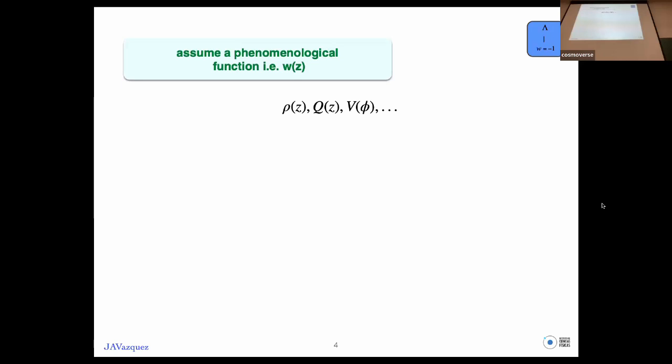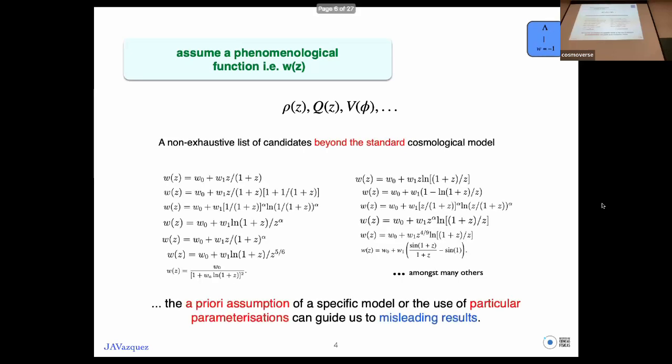For instance, the equation of state for dark energy, but it could be something else as well - the dark energy density, the interacting kernel, the scalar field scenario, or even the magnitude of the supernovae. There's a long list of parameterizations to describe the properties of dark energy.